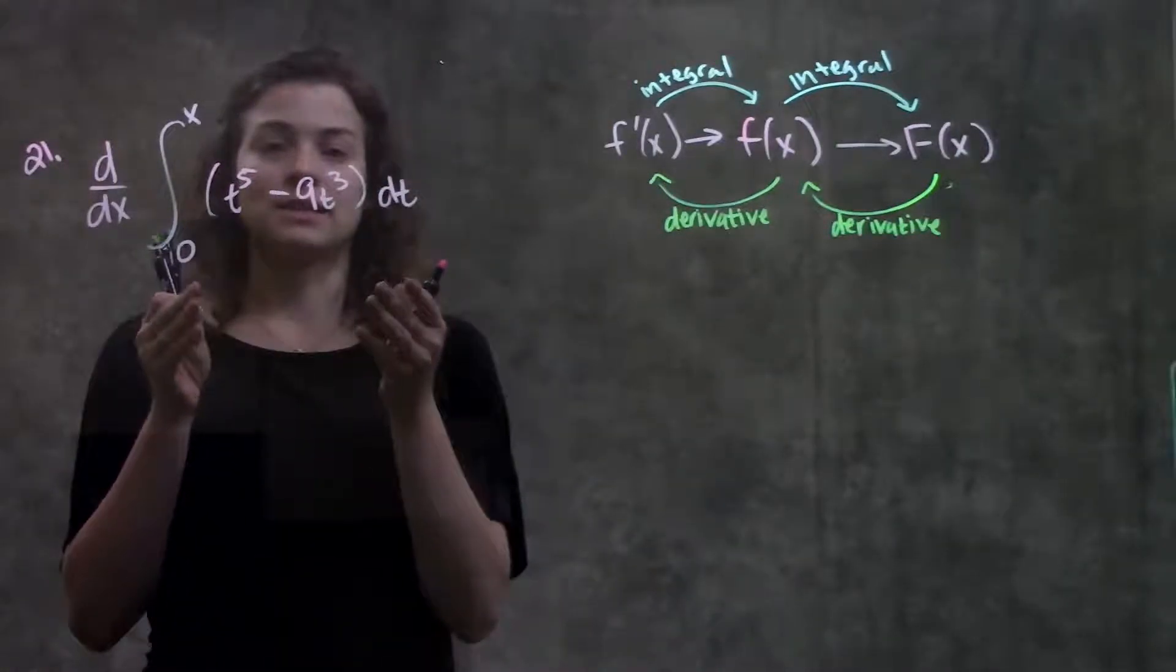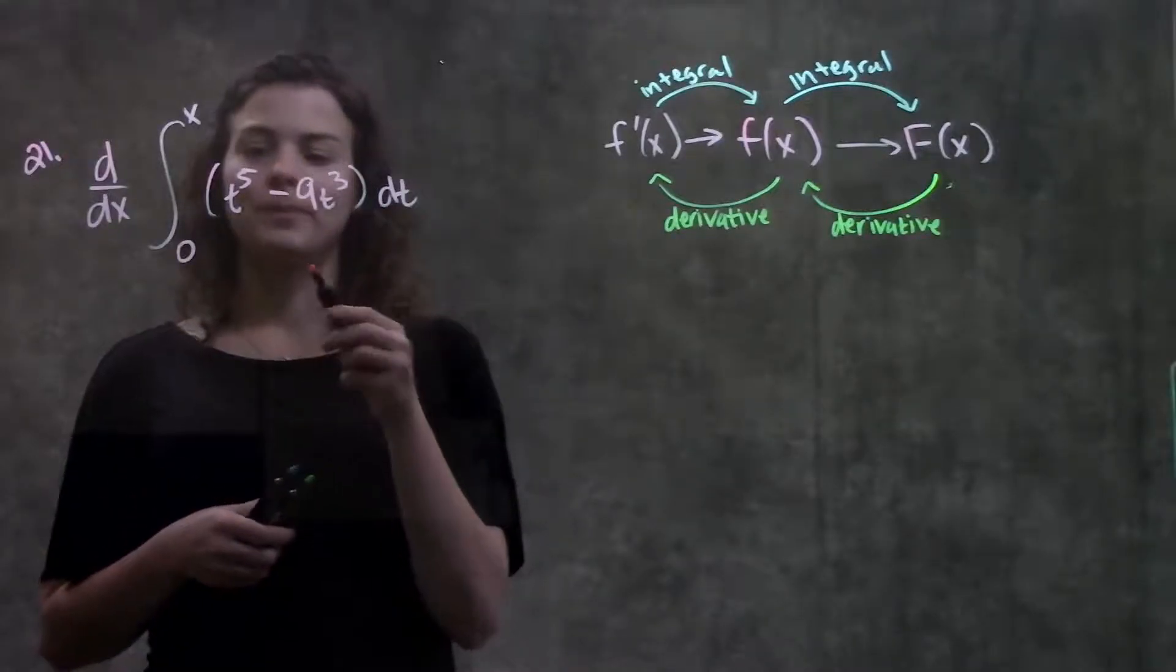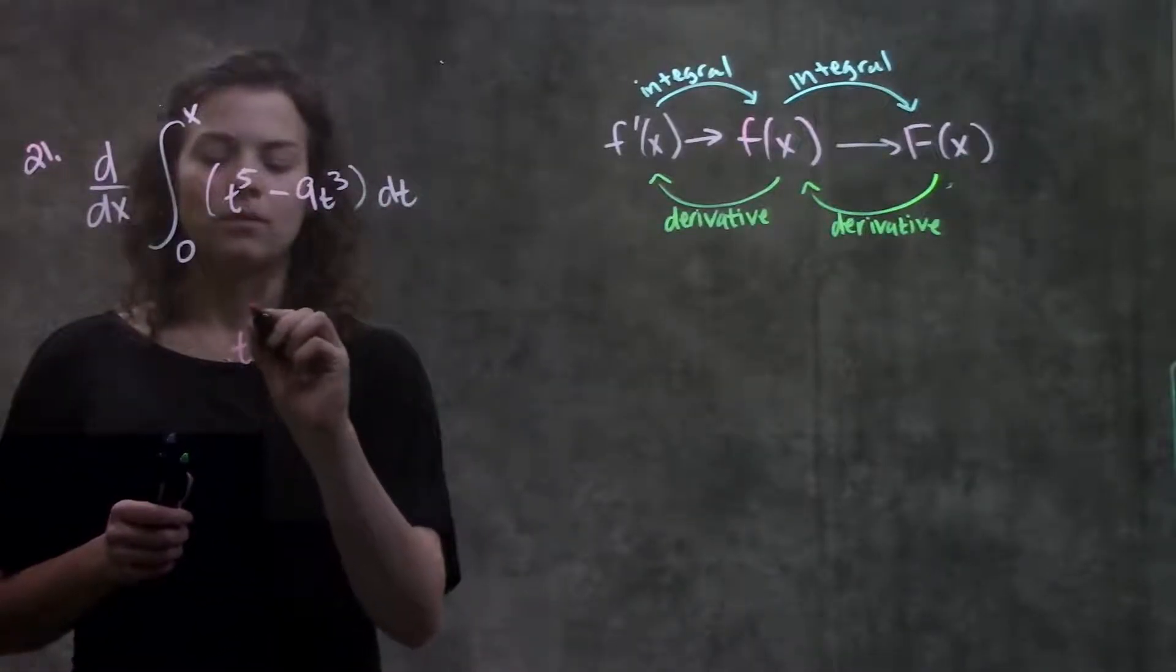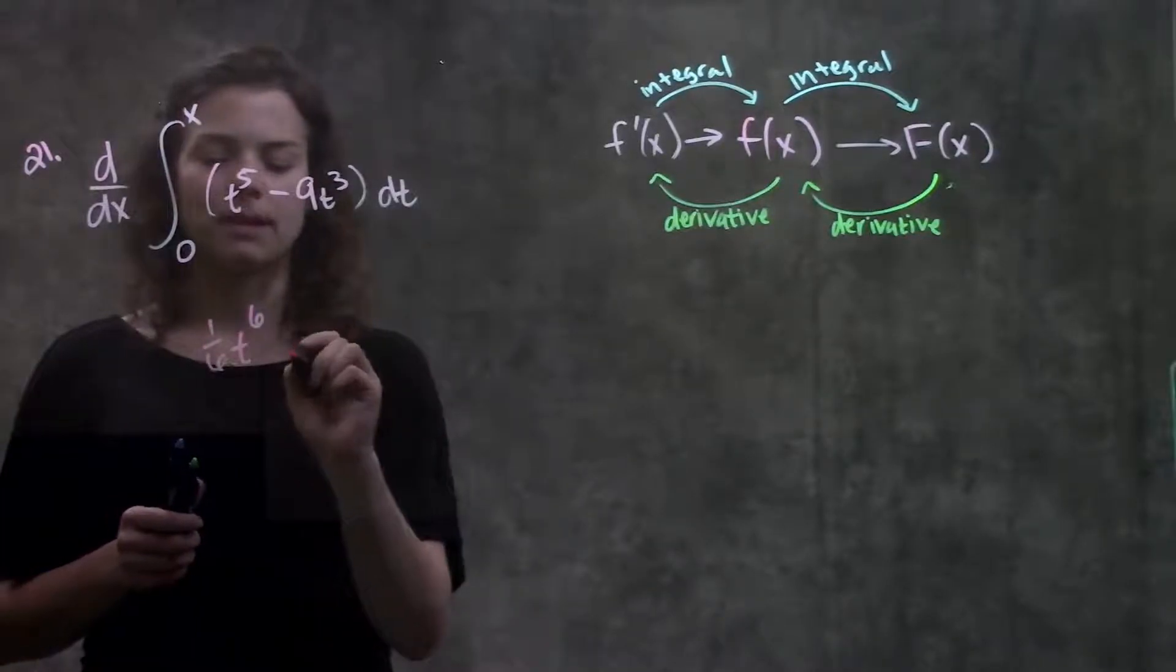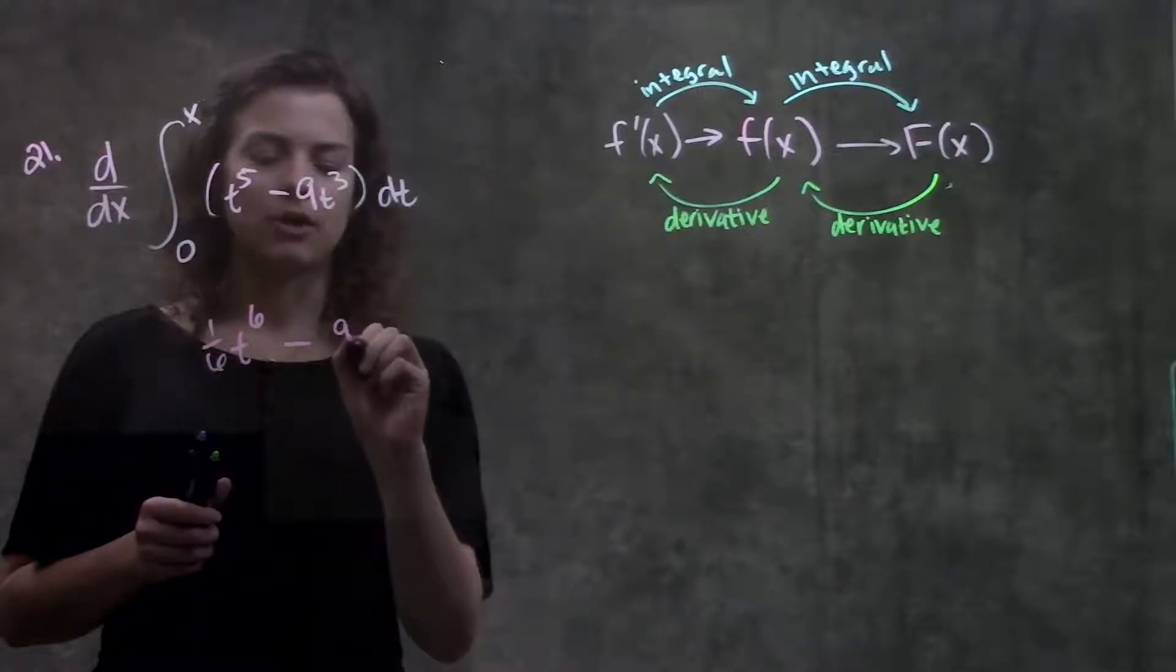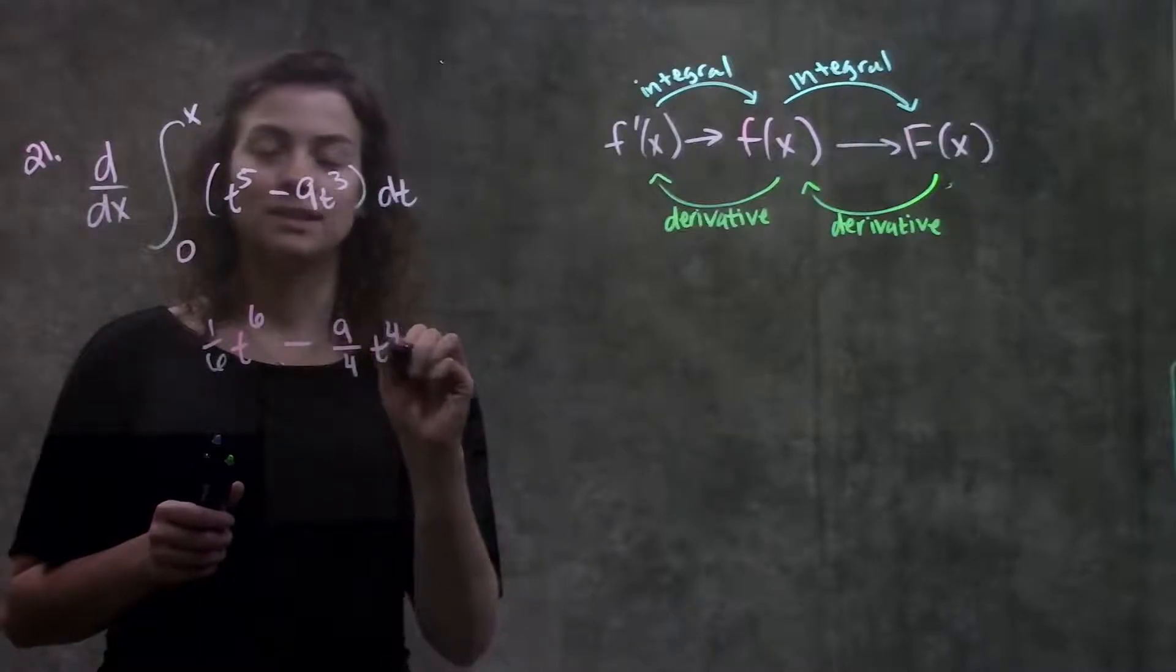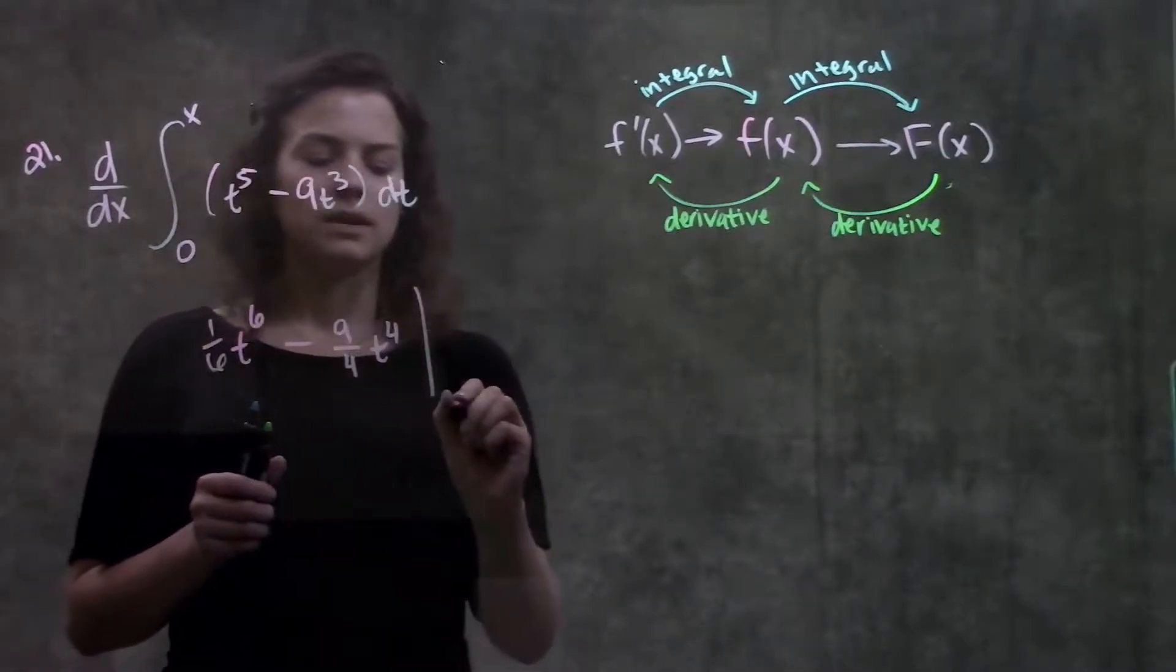This first part is asking us to find the integral of this function. The integral of t to the fifth, just add one to the exponent multiplied by the reciprocal. Same thing over here. This will become 9 over 4, t to the fourth, from 0 to x.